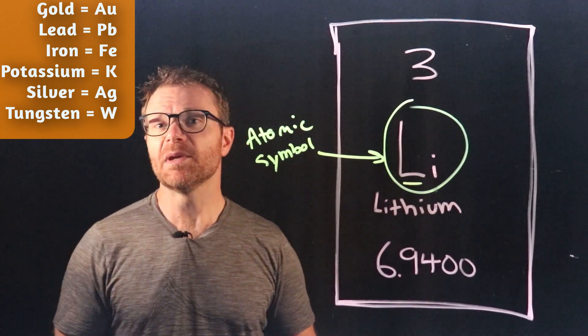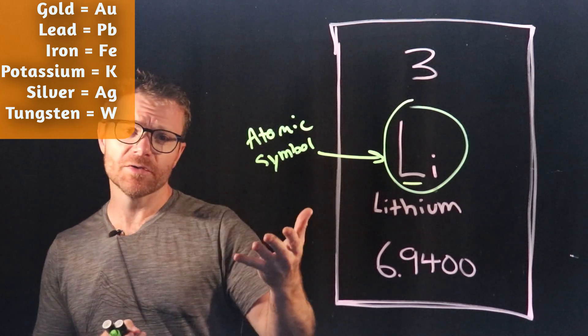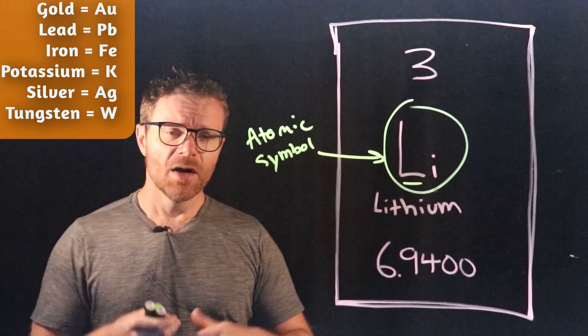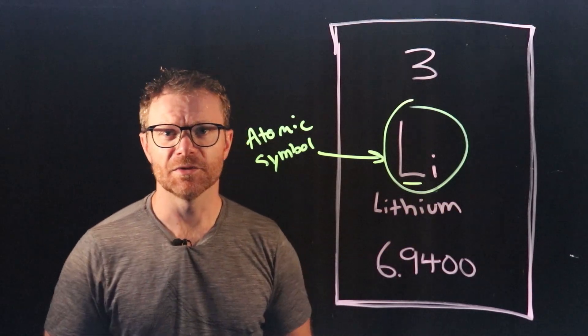For example, lead is Pb. Over time, you'll just kind of get to know them all. Maybe your teacher asks you to memorize them. Most don't. I don't ask my students to memorize the atomic symbols, but you should be able to look at a periodic table and find the various atomic symbols for the elements.